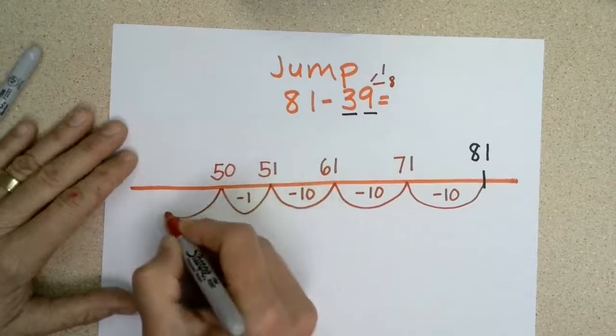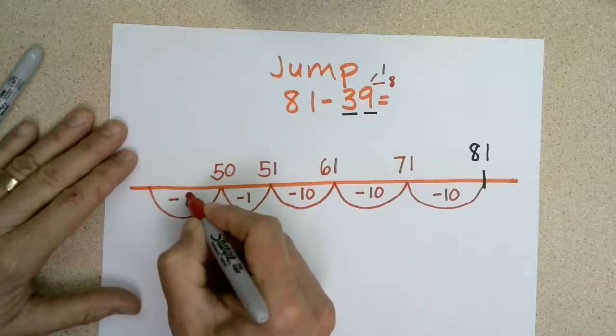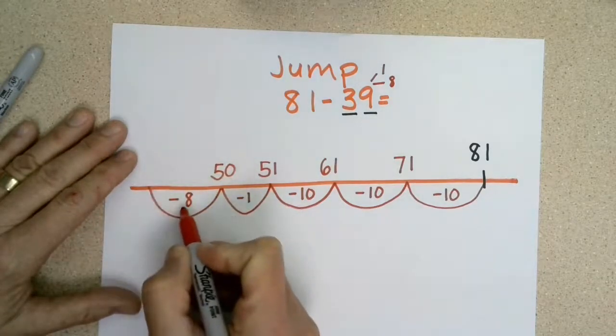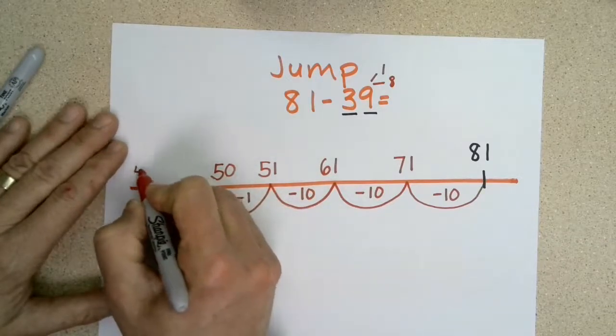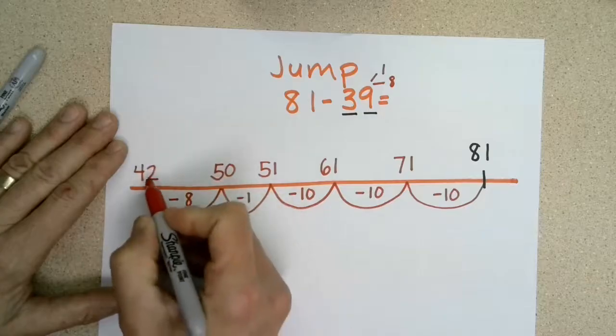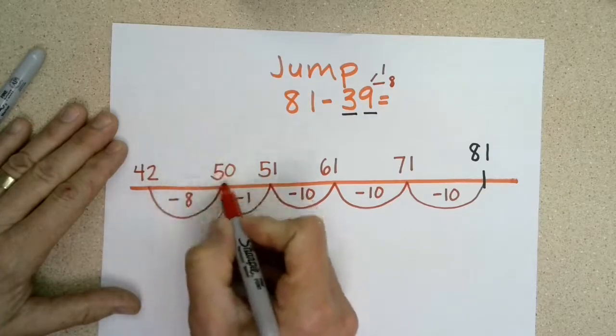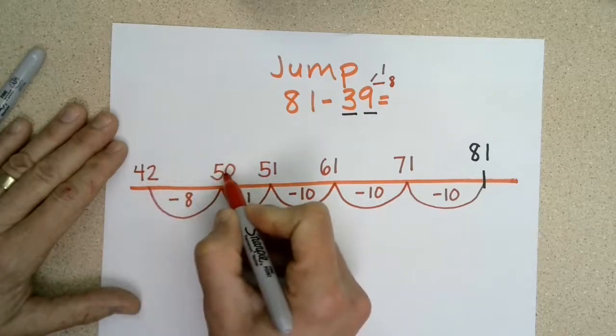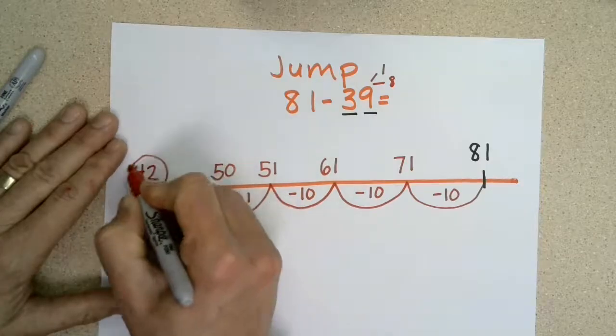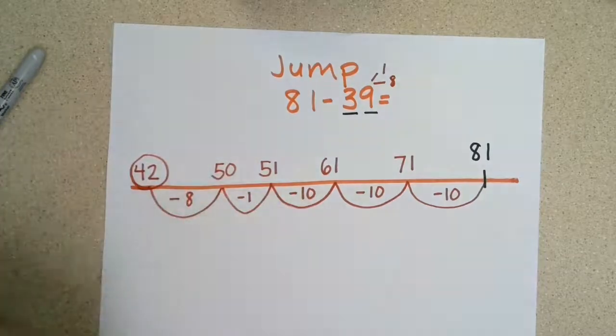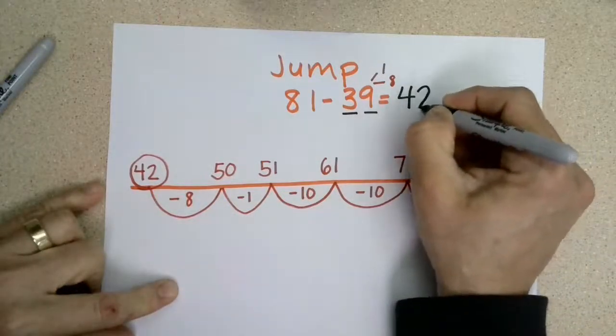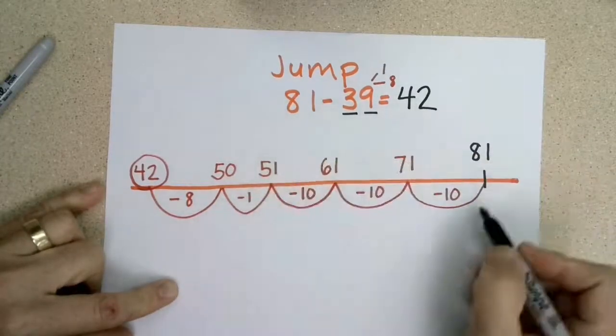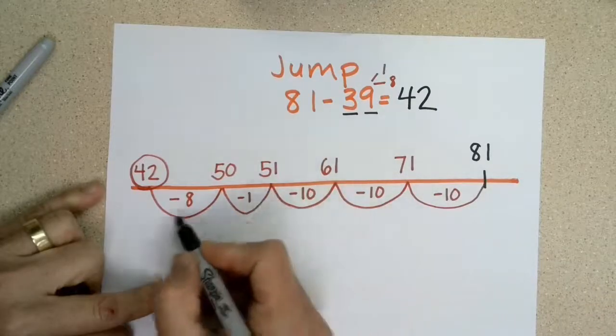Then I'm going to take away eight. One way to think about this is: what number plus eight is 50? Or 50 minus eight? 50 minus eight is 42. The other way to look at it is, if I was going forward, 42 plus eight would be 50. So I know my answer is 42. 81 minus 39 is 42 using the jump strategy.